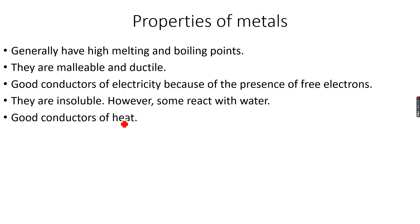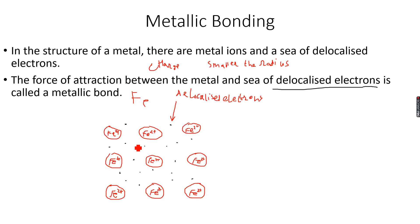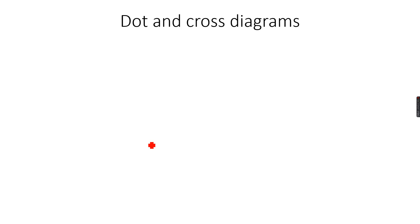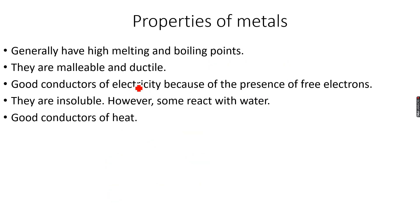Looking at the properties of metals: metals generally have high melting and boiling points. This is because the metallic bonds are very strong — the force of attraction between the metal ions and the sea of delocalized electrons is very strong — so a lot of energy is needed to break these bonds, and that's why most metals are solid.